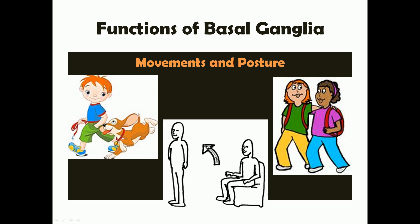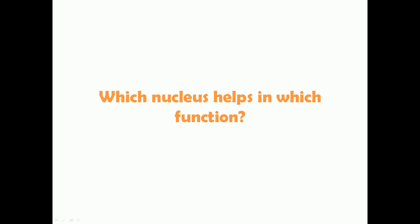The basal ganglia is mainly involved in controlling movements and posture. Every movement — from a simple action to complex activities like dancing or gymnastics — requires a normally functioning basal ganglia. Similarly, maintaining proper posture, such as sitting correctly on a chair, also requires an intact basal ganglia. So the main functions are helping maintain movements and posture.